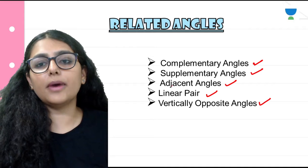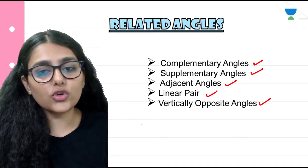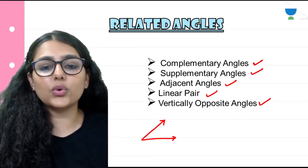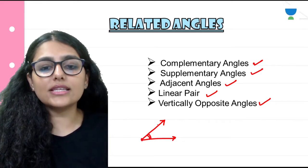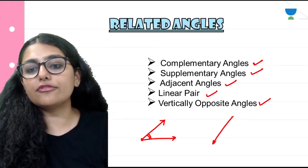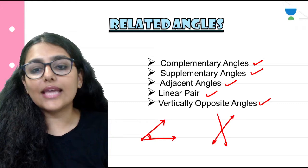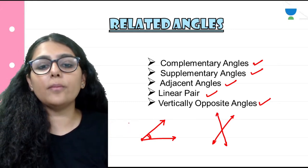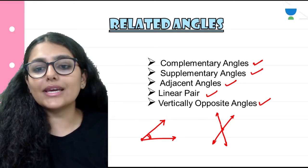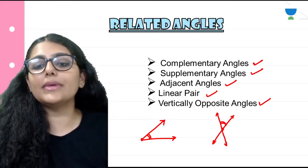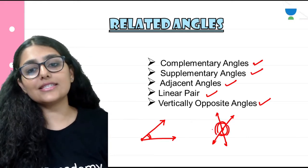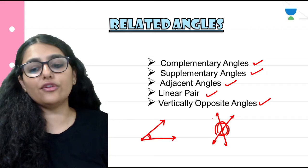Before that, everybody knows what's an angle, right? Where two line segments, lines, or rays meet is known as an angle. If two lines are intersecting, then certain angles are formed at a common vertex. With a common vertex and two non-common arms, four angles are formed. We have done this in earlier classes. Now we are going to talk about pairs of angles.